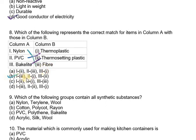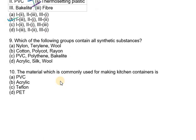Question number nine says which of the following groups contain all synthetic substances? Out of these four options, we have PVC, polythene, and bakelite. These three are all synthetic substances, so the right option is C here.